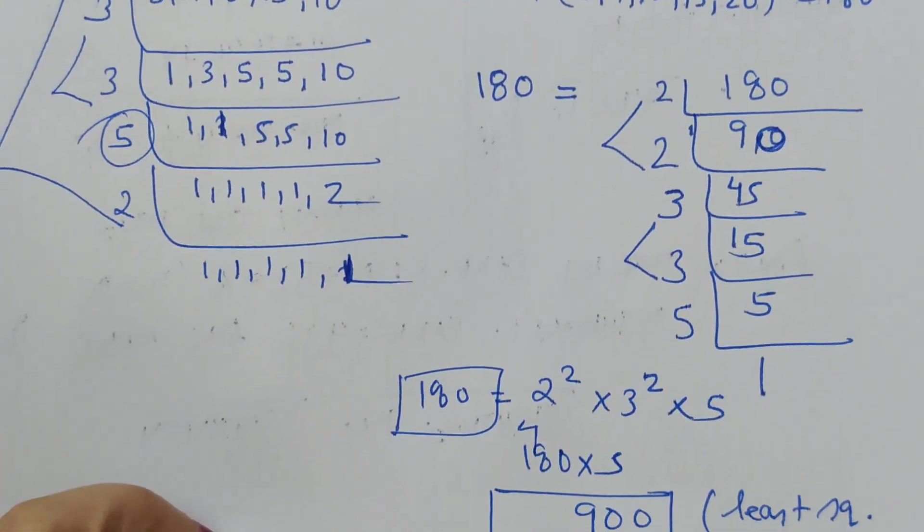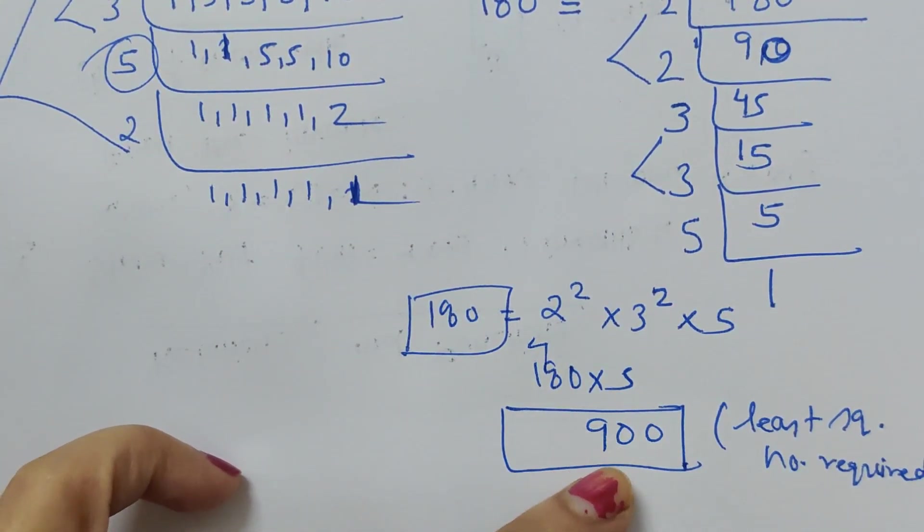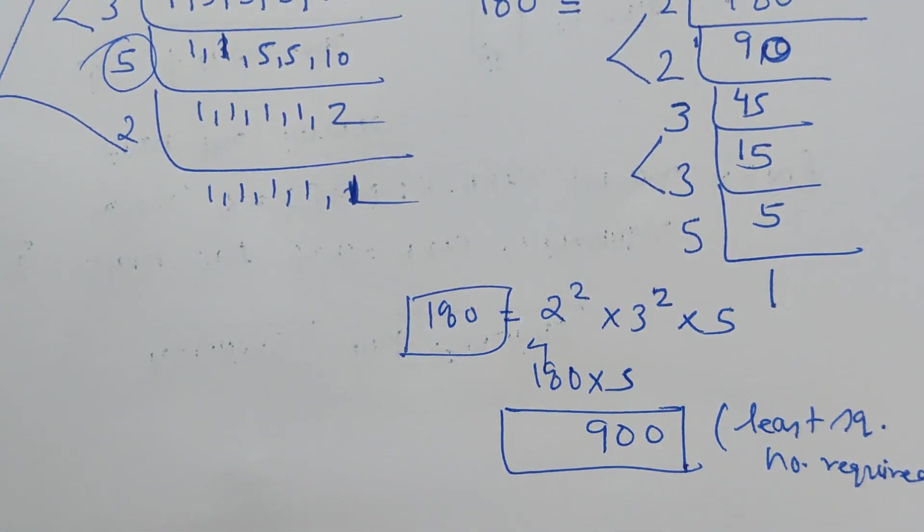180 times 5, we got 900, and 900 is a perfect square. Its square root is 30. I hope this problem is clear to all. Thank you.